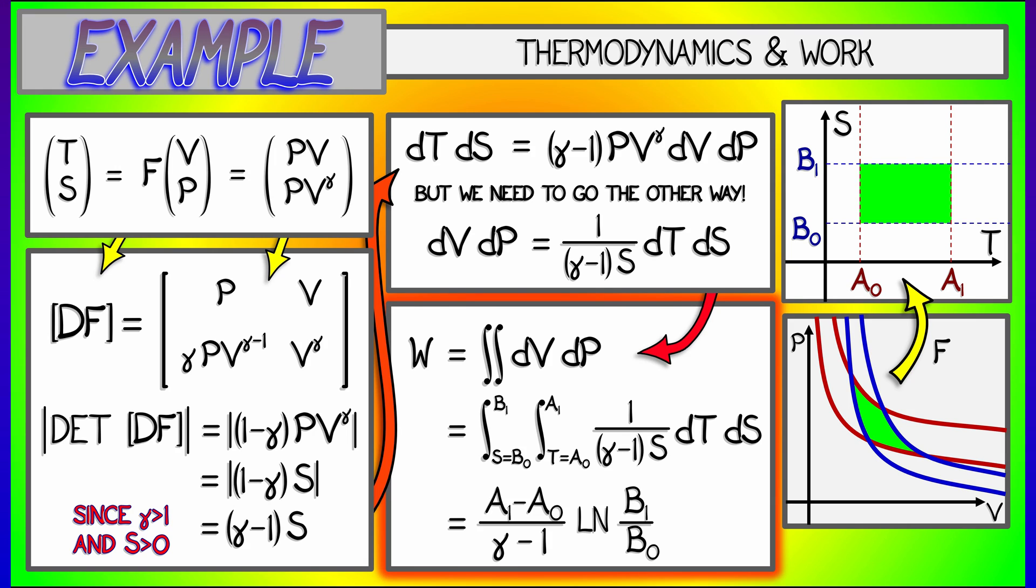It is A1 minus A0 divided by gamma minus 1 times the log of B1 divided by B0. And that's as easy an integral as we could hope to do. Thank you. Change of Variables Theorem.